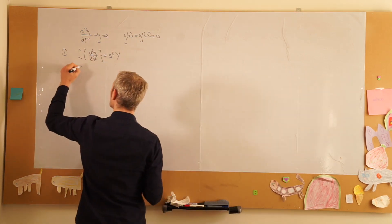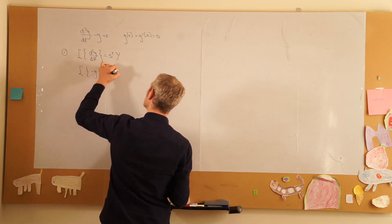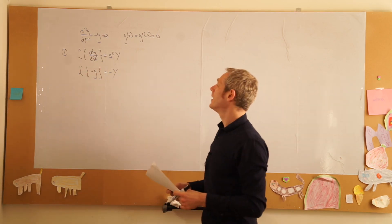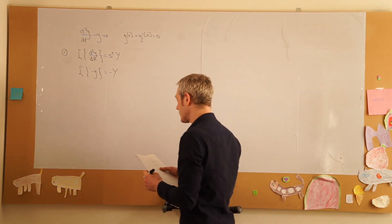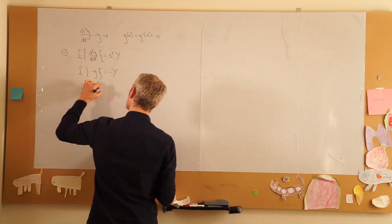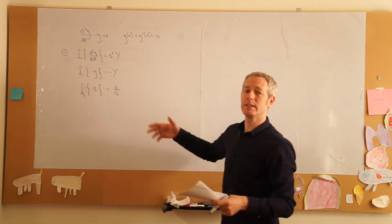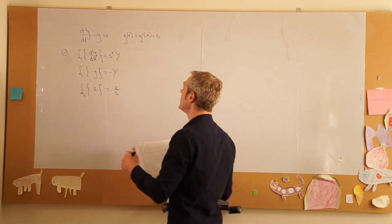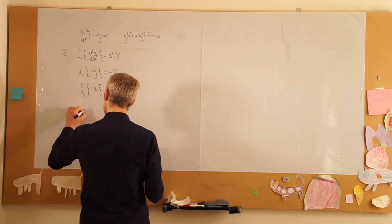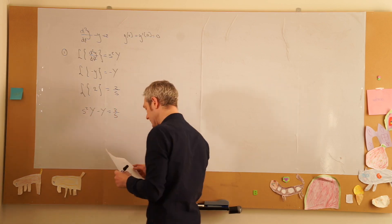The Laplace transform of minus y is minus capital Y, and the Laplace transform of 2 is 2 over s. Now if we take this all together, we get that s squared times Y minus Y is equal to 2 over s.